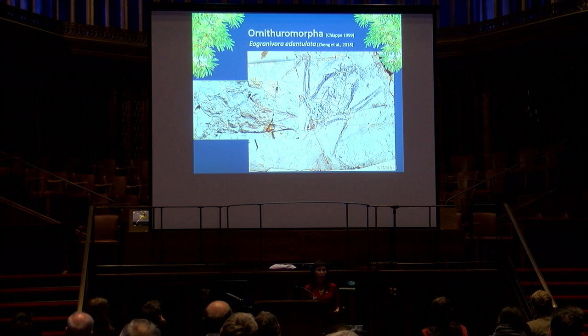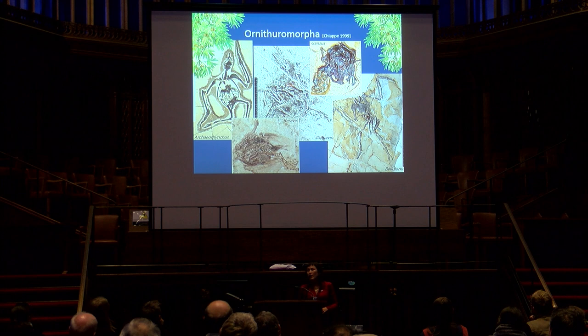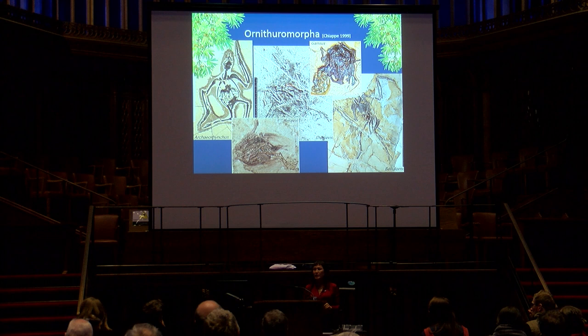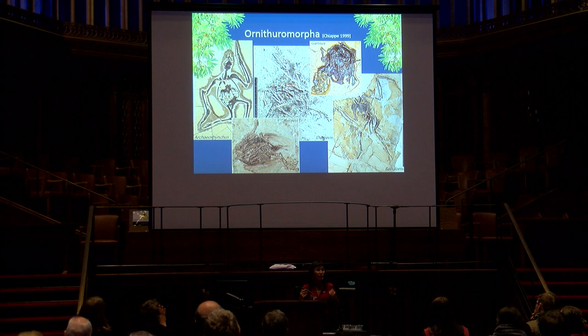A number of other specimens don't preserve direct evidence of diet but do preserve gastroliths, which are an indicator of diet. When we look at all these specimens together, we actually notice different morphologies of gastrolith masses hinting at differences in diet. One pattern we see is that specimens with a smaller number of larger stones are taxa that still retain their teeth — a pattern that needs to be explored further.